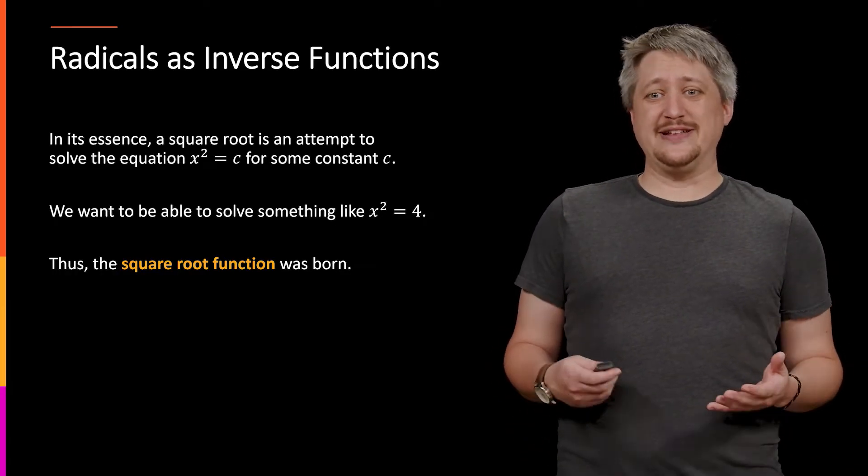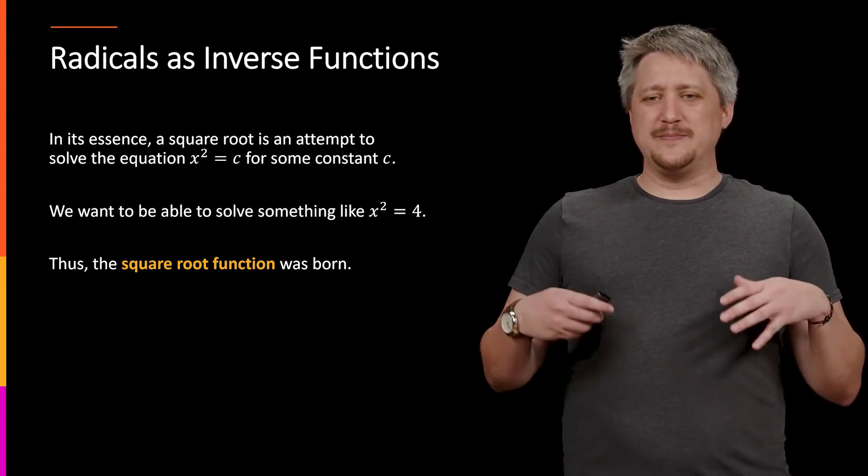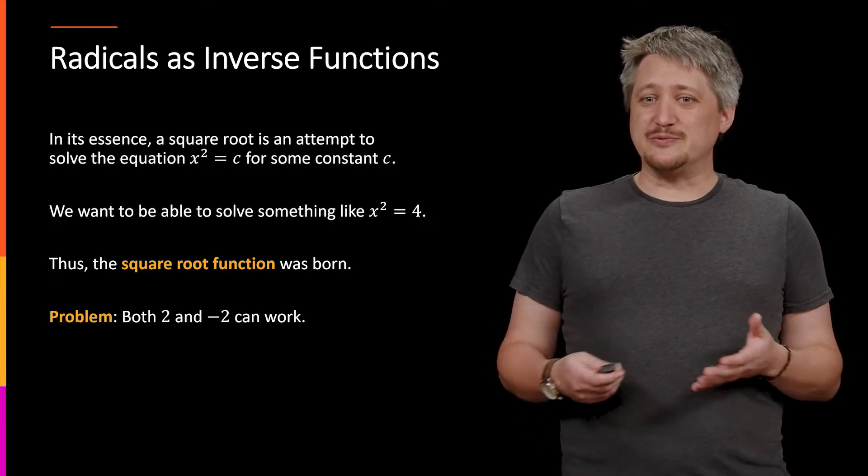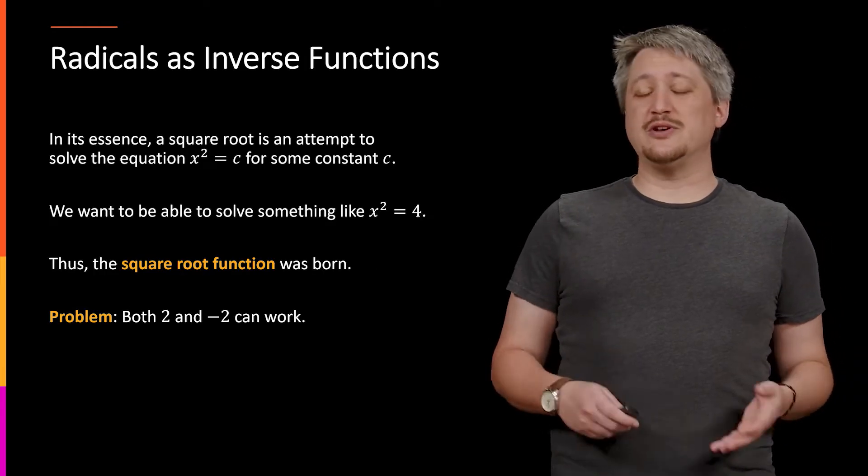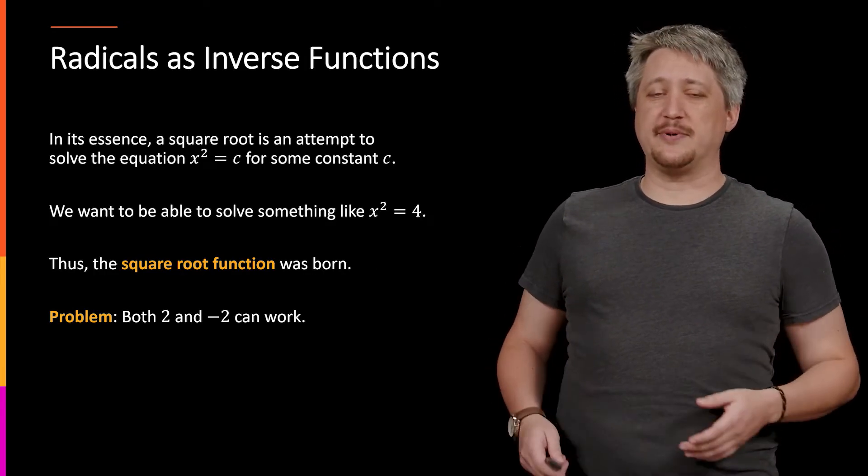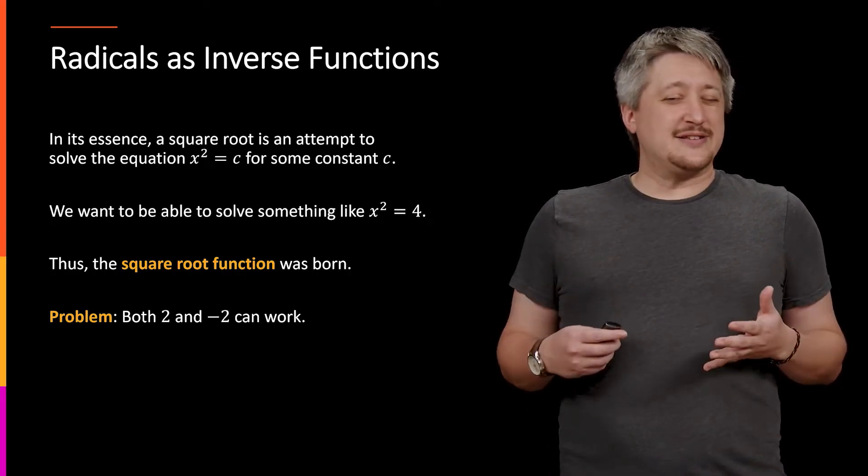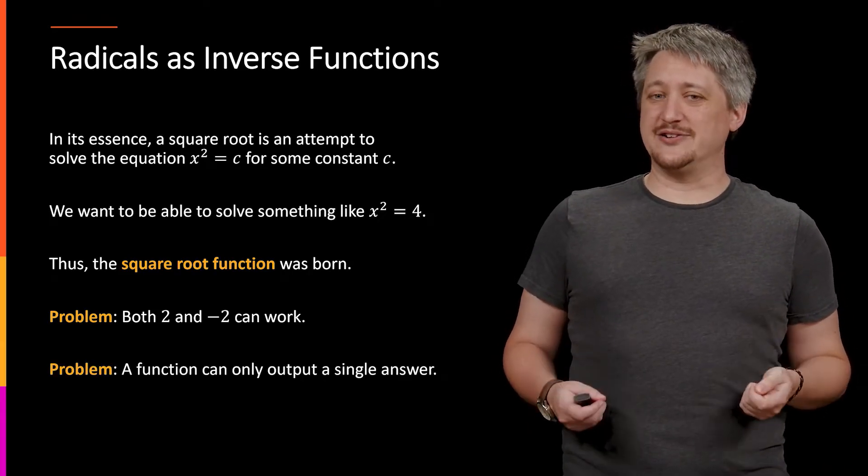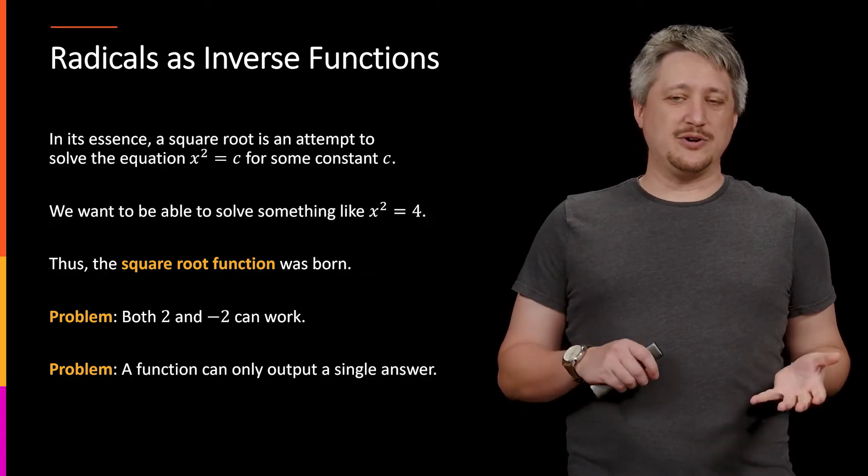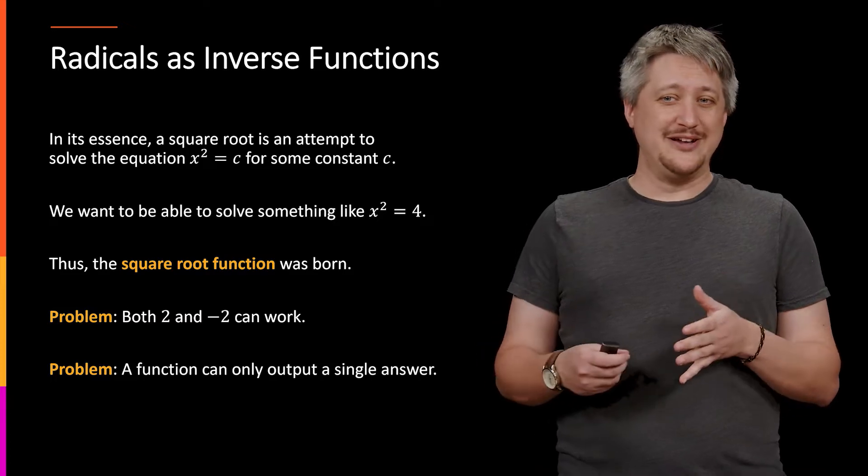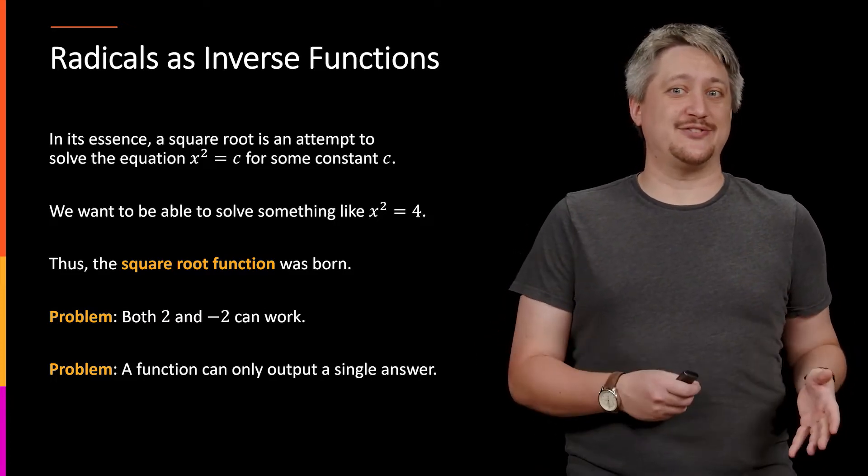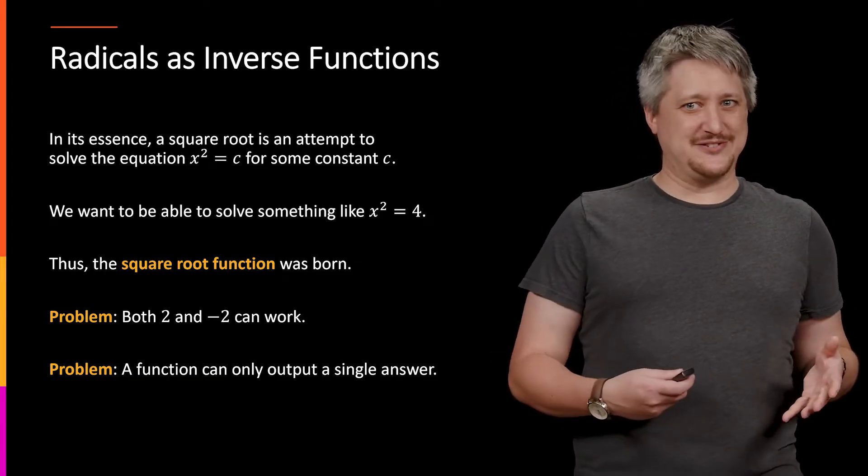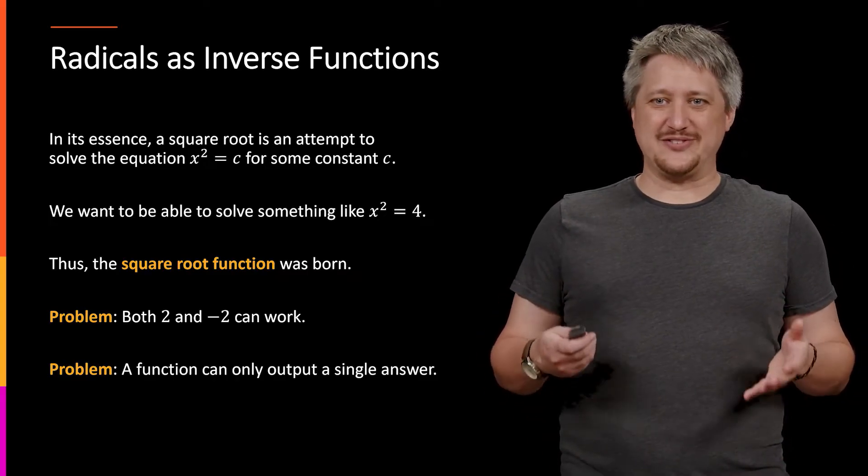But immediately we run into some trouble with the square root function. The problem is that if we're trying to answer something squared equals four, we have two plausible answers: we have two, but we also have negative two, because if we square negative two we also get positive four. Now that might not seem like a problem, but remember we want a square root function, and functions only have a single output. So we can't have a function that gives us all the answers. There's a problem, a choice of some sort.